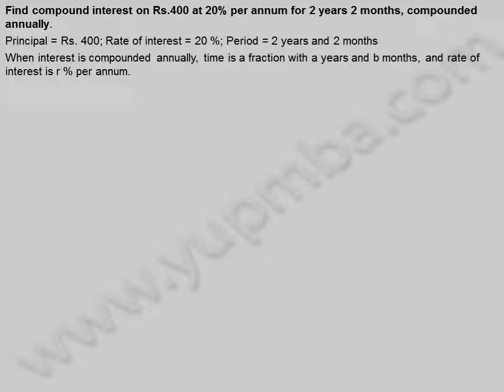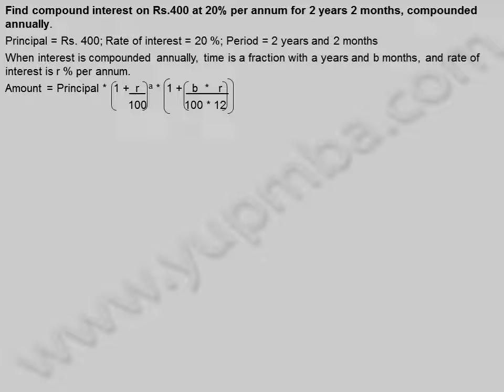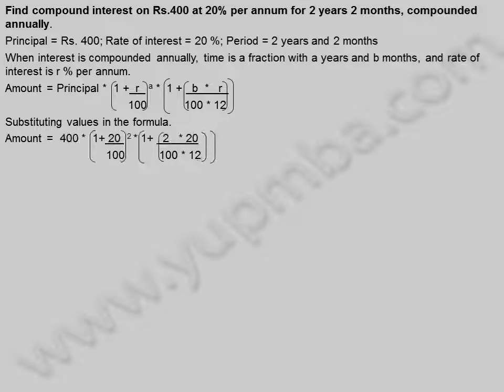When interest is compounded annually and time is a fraction with A years and B months, amount = Principal × (1 + R/100)^A × (1 + B×R / (100×12)). Substituting values: Amount = 400 × (1 + 20/100)² × (1 + 2×20 / (100×12)).